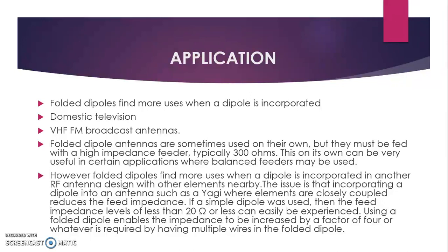However, folded dipoles find more uses when a dipole is incorporated in other RF antenna systems with other elements nearby. The issue is that incorporating a dipole into an antenna such as a Yagi — where elements are closely coupled — reduces the feed impedance. If a simple dipole is used, a feed impedance level of less than 20 ohms or less can easily be experienced. Using a folded dipole enables the impedance to be increased by a factor of four, or whatever is required, by having multiple wires in the folded type.